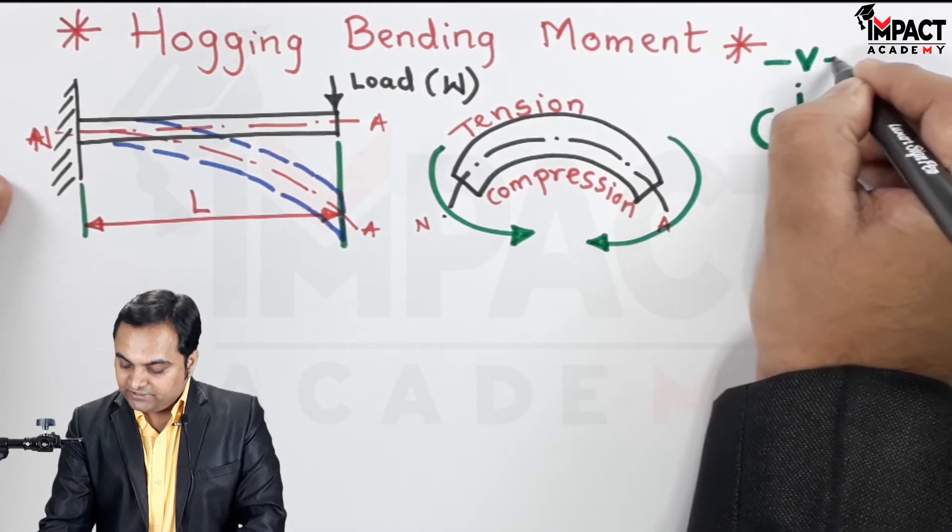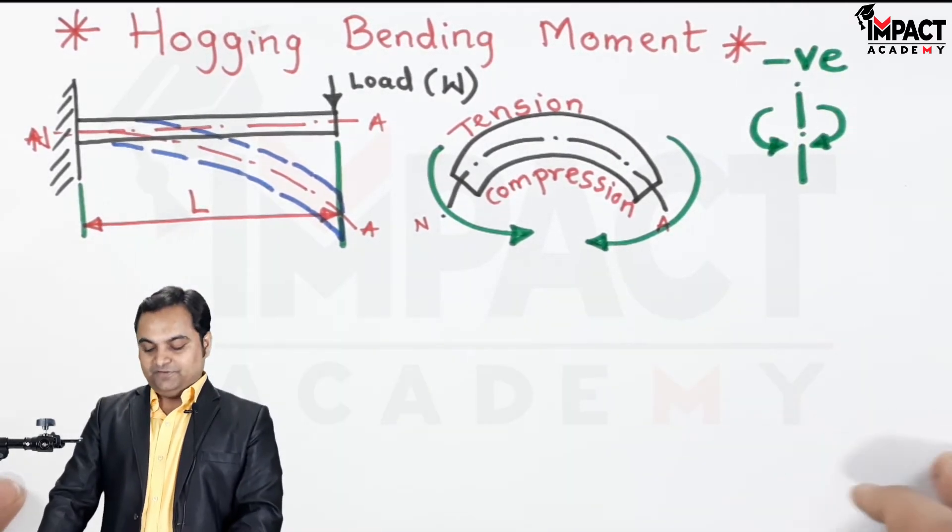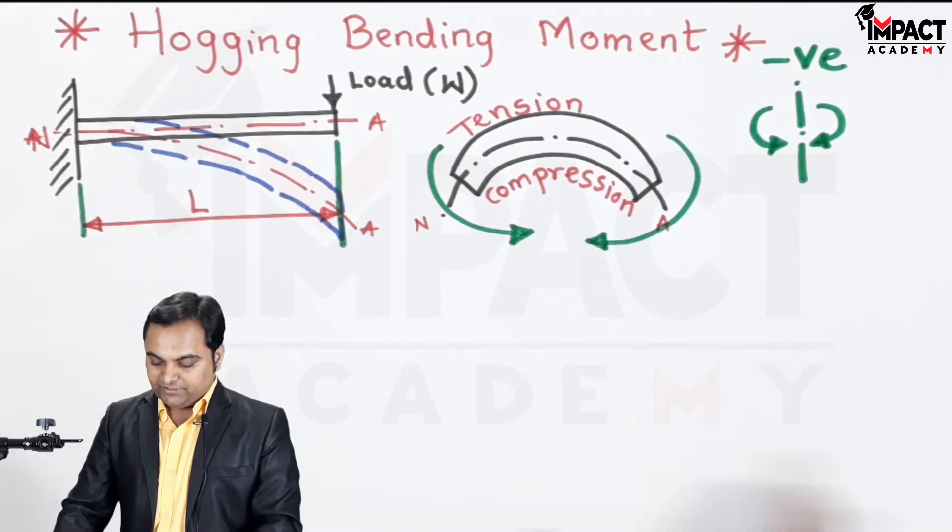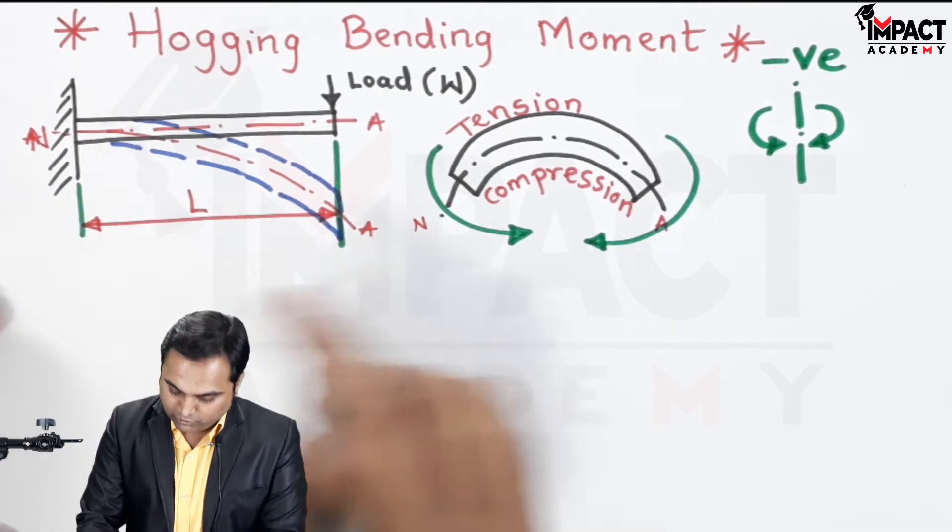Then after this, I'll draw the stress distribution diagram considering the rectangular cross section for hogging bending moment.